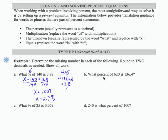Part B, what percent of 620 is 136.4? So X times 620 equals 136.4. Divide both sides by 620. I'm going to eliminate the step where I write that on the left. I'm just going to show 136.4 divided by 620. And that's going to give me 0.22, which as a percent, is 22%.